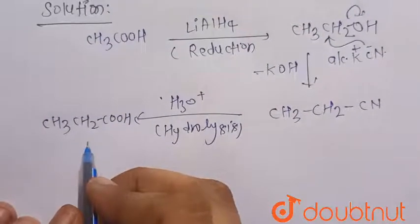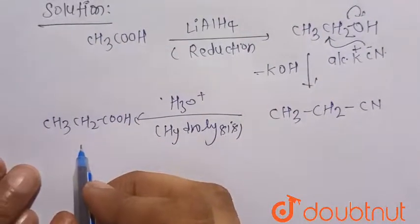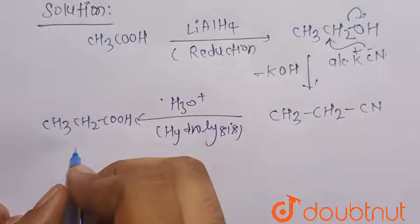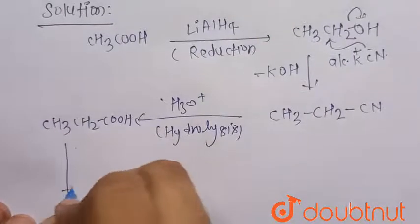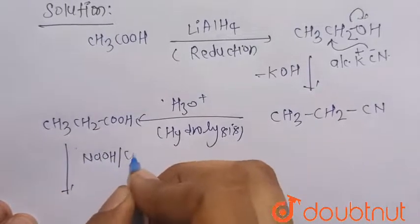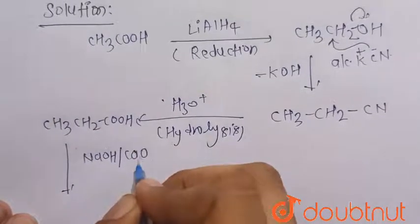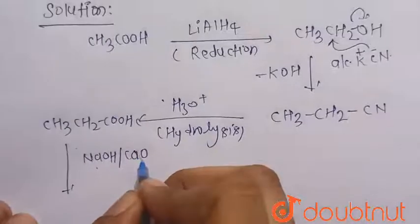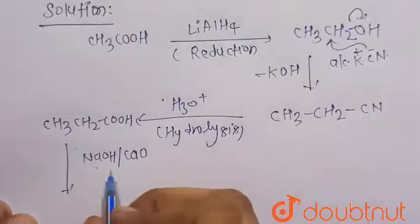This is propanoic acid, but we have to change acetic acid into ethane. Then it is treated with soda lime, that is NaOH in presence of CaO. This is the Kolbe electrolysis.